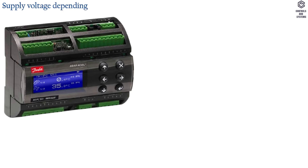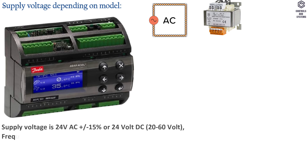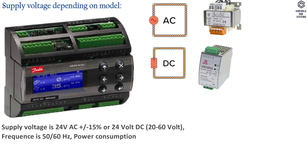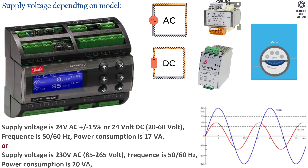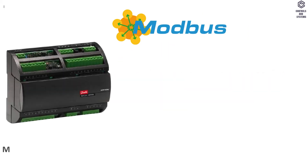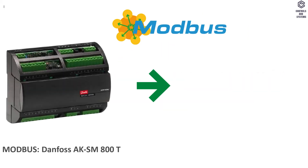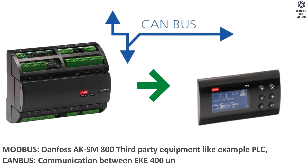Electrical data: supply voltage, depending on model, is 24V AC ±15% or 24V DC, 20 to 60 volts; frequency is 50 or 60 Hz; power consumption is 17 VA. Data communication: Modbus for Danfoss AK-SM800 and third-party equipment such as PLCs; CAN bus for communication between EKE400 units and HMI.